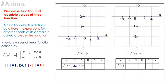Modulus negative 2 is positive 2, modulus negative 1 is 1, modulus 0 is 0, modulus 1 is 1, modulus 2 is 2. Plot all these points: negative 2, 2; negative 1, 1; 0, 0; 1, 1; 2, 2.